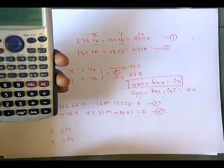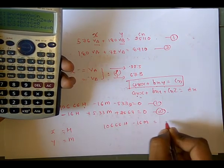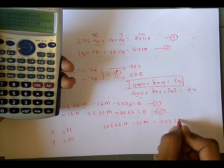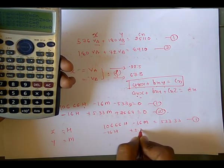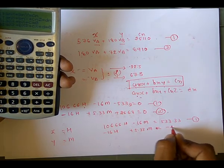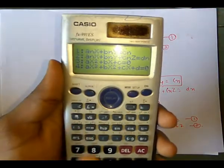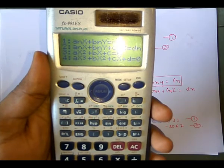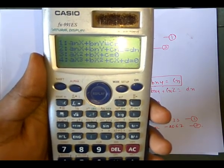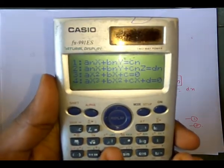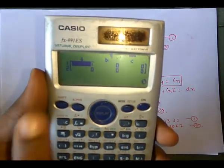Moving minus 533.33 to the right-hand side, equation one becomes: 106.66·h minus 16·m equals 533.33. Equation two becomes: minus 16·h plus 5.33·m equals minus 26.67. The calculator gives four options; select option 1 for two unknowns x and y.